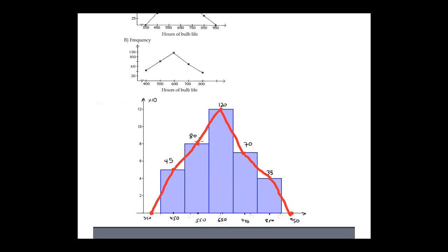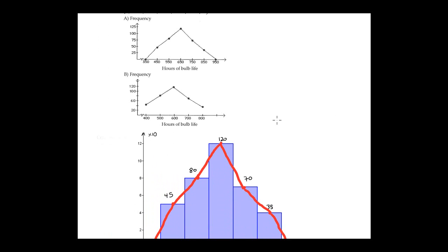The frequencies are 45, 80, 120, 70, 85. The midpoint of each class is calculated — for example, the first class is 400 to 500, so 400 plus 500 divided by 2 equals 450. This is the midpoint, called the mark of the class.